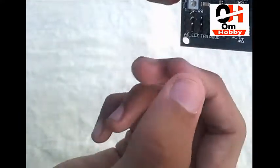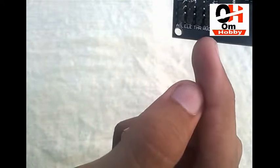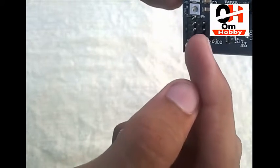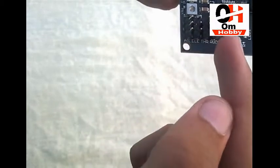Here's elevator, aileron, throttle, and rudder. These are the inputs, which means we have to connect our receiver to these pins.